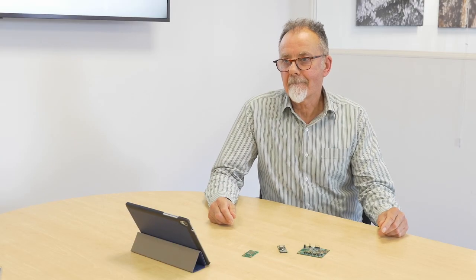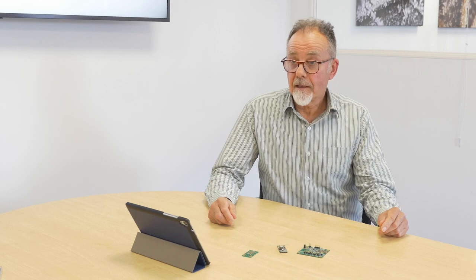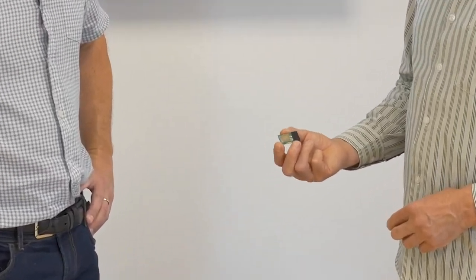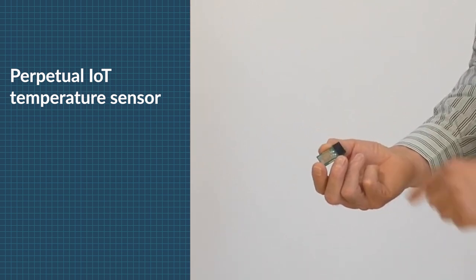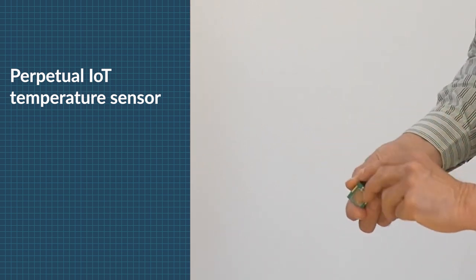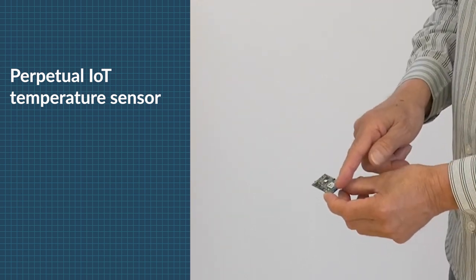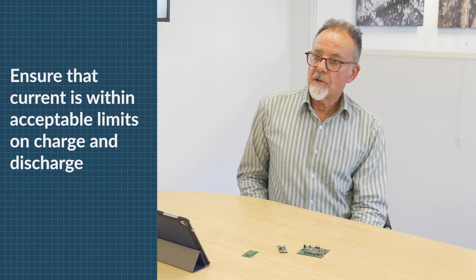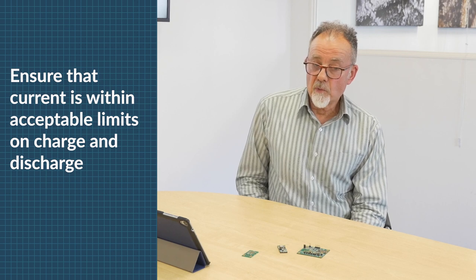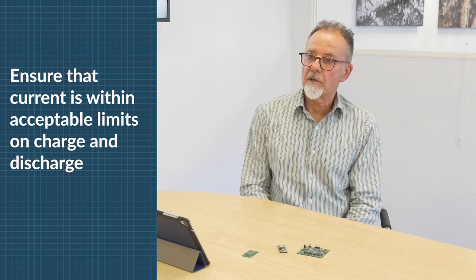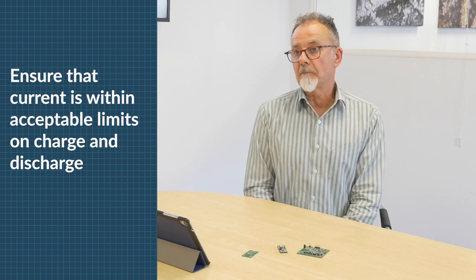So likewise, I guess you need to limit the current. Yeah, it's important to limit the current in and out of the battery. This usually has to be done either by design or by incorporating specific additional components into the circuitry to make sure those safe current values aren't exceeded. So by design, I mean make sure that your load isn't consuming more than the allowable maximum current and when charging, make sure the charging circuit isn't providing more than the allowable current into the battery.